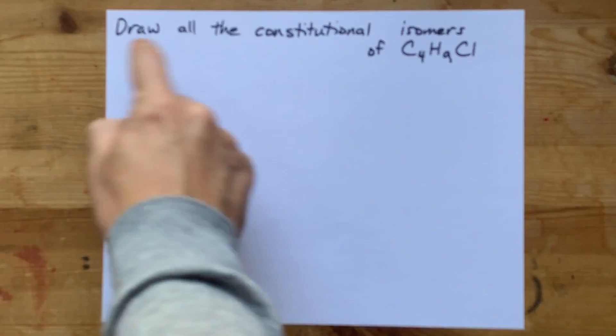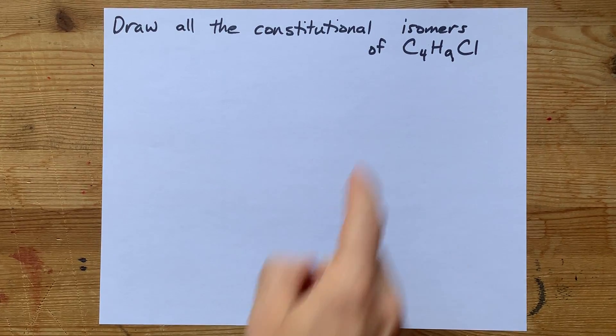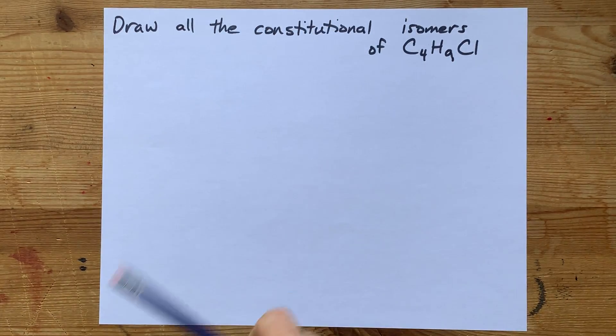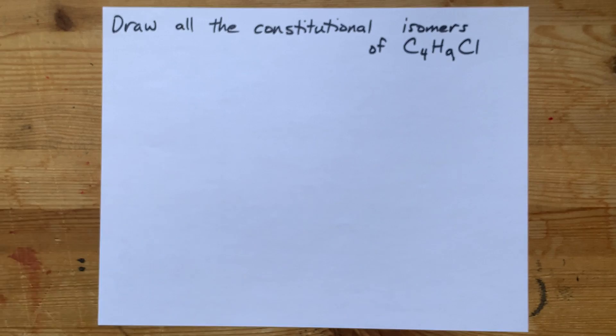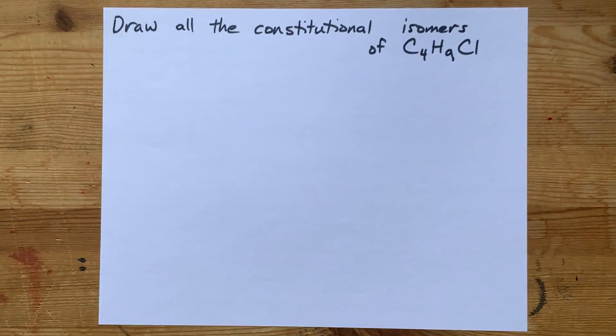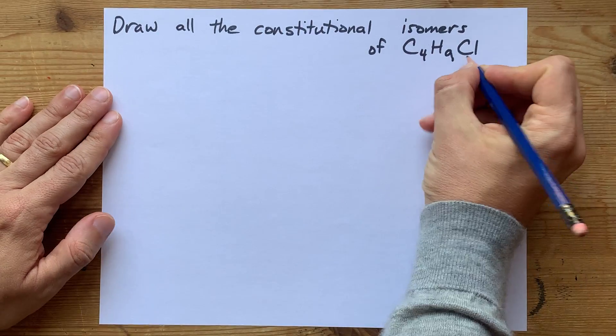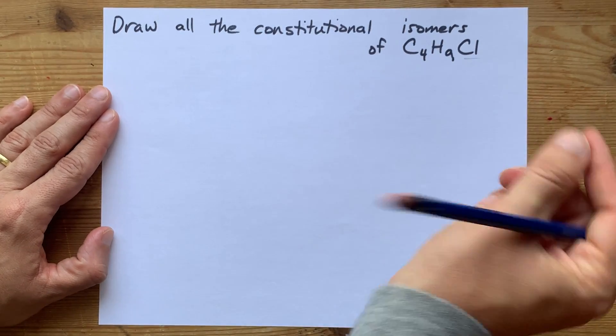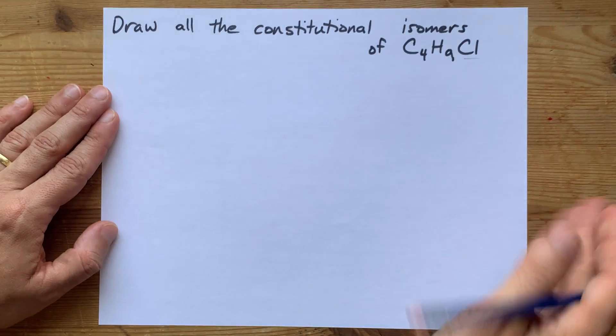The request is to draw all the constitutional isomers for C4H9Cl. Constitutional isomers are ones that are connected differently and therefore have a different name. Now, the way that I deal with halogens when I'm asked to come up with constitutional isomers is to initially treat them just like they were hydrogen.